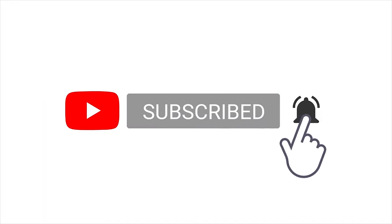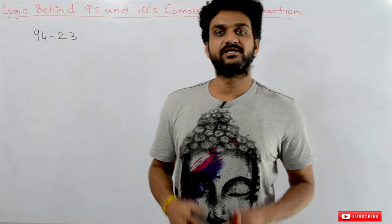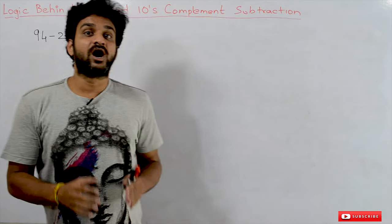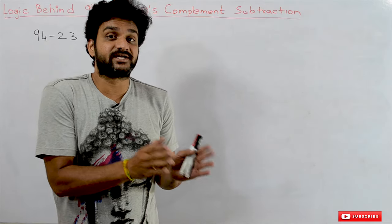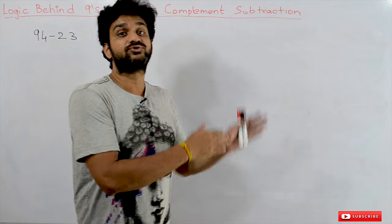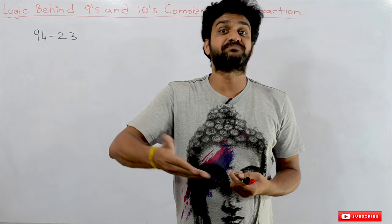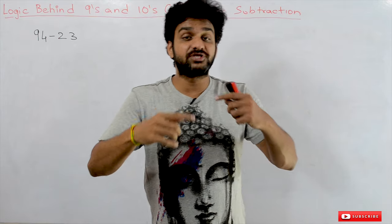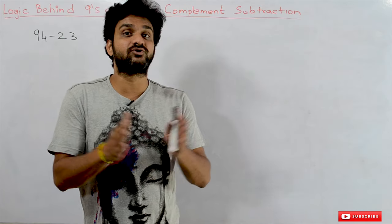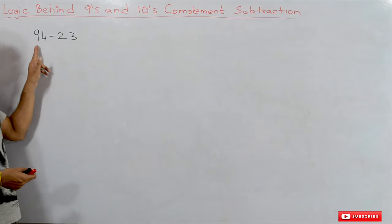Welcome to Learning Monkey, I am Vikram. In this class we'll try to understand the logic behind 9s and 10s complement subtraction. In our previous video we have seen how to do 9s and 10s complement subtraction — we discussed the steps involved. But there we haven't explained how those steps produce the subtraction result. So in this class we will elaborate and clarify those steps using the example 94 minus 23.